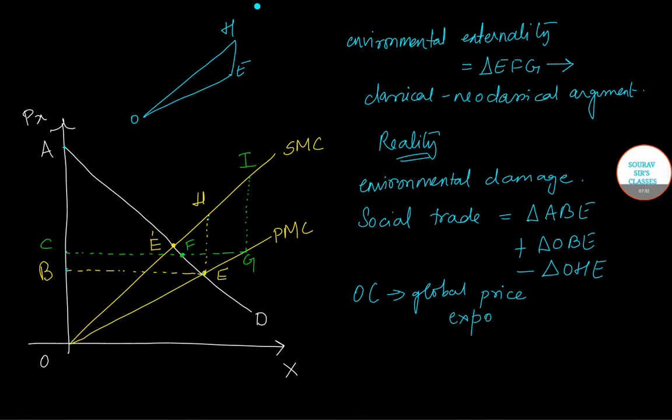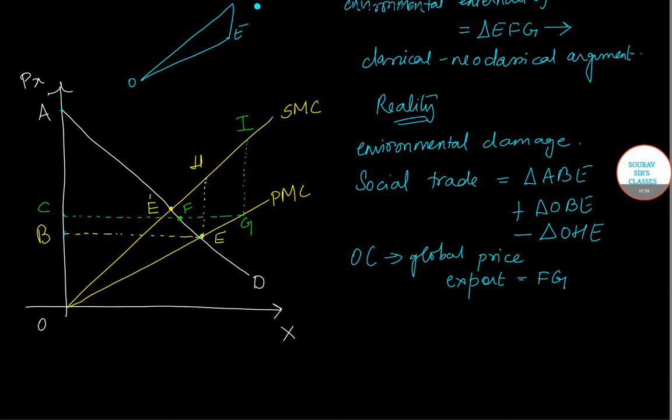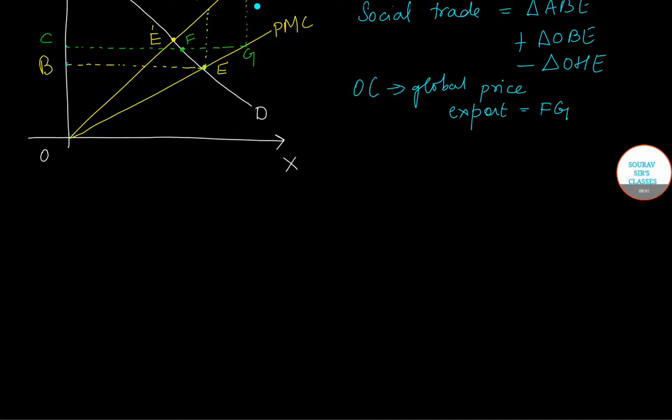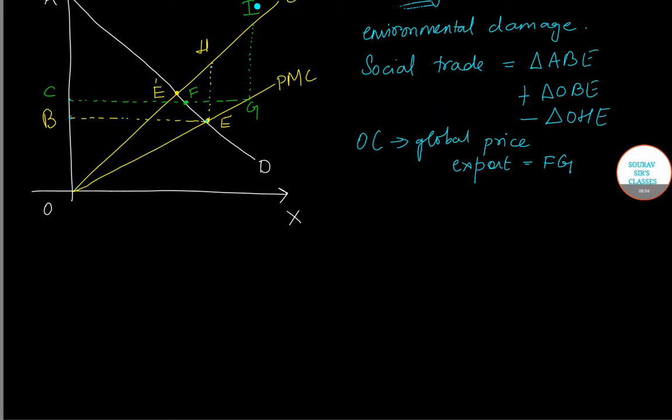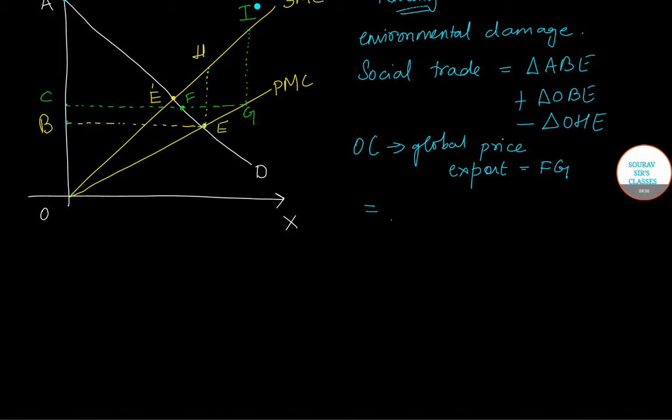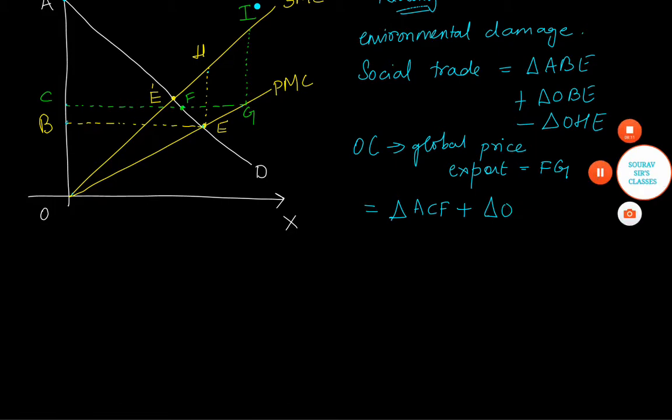Now given the global price is OC, export becomes FG. So welfare under trade is given by triangle ACF plus triangle OCG less OIG.